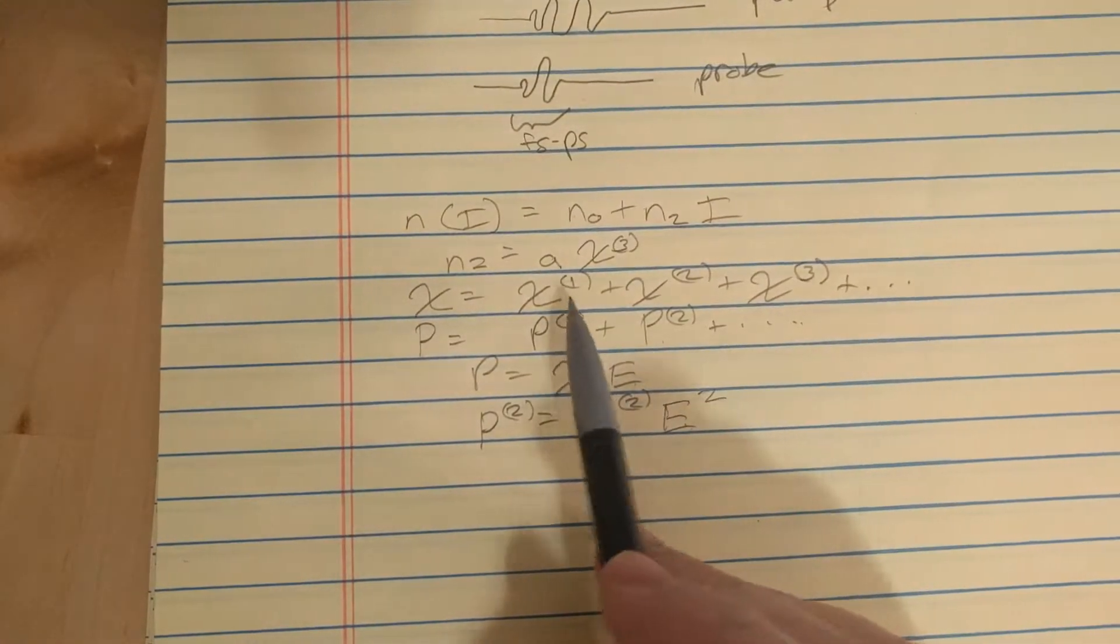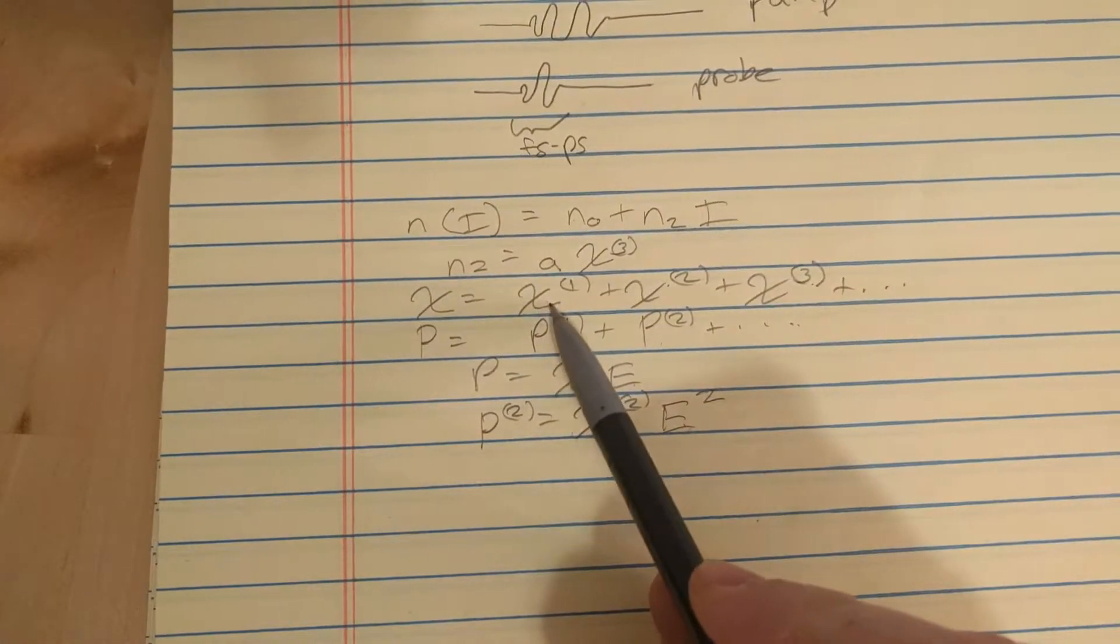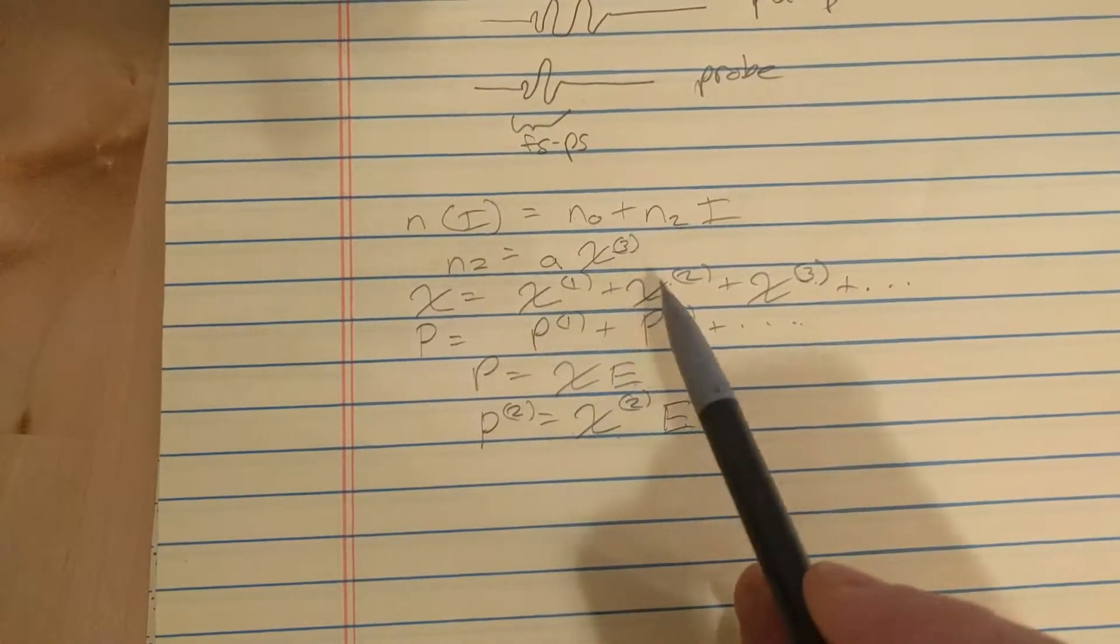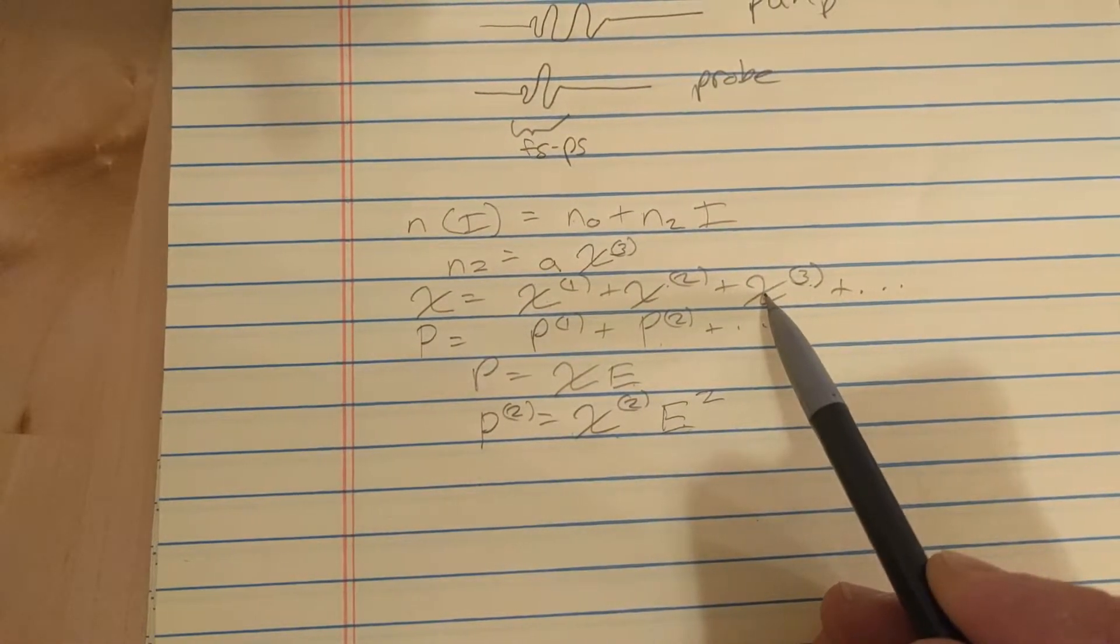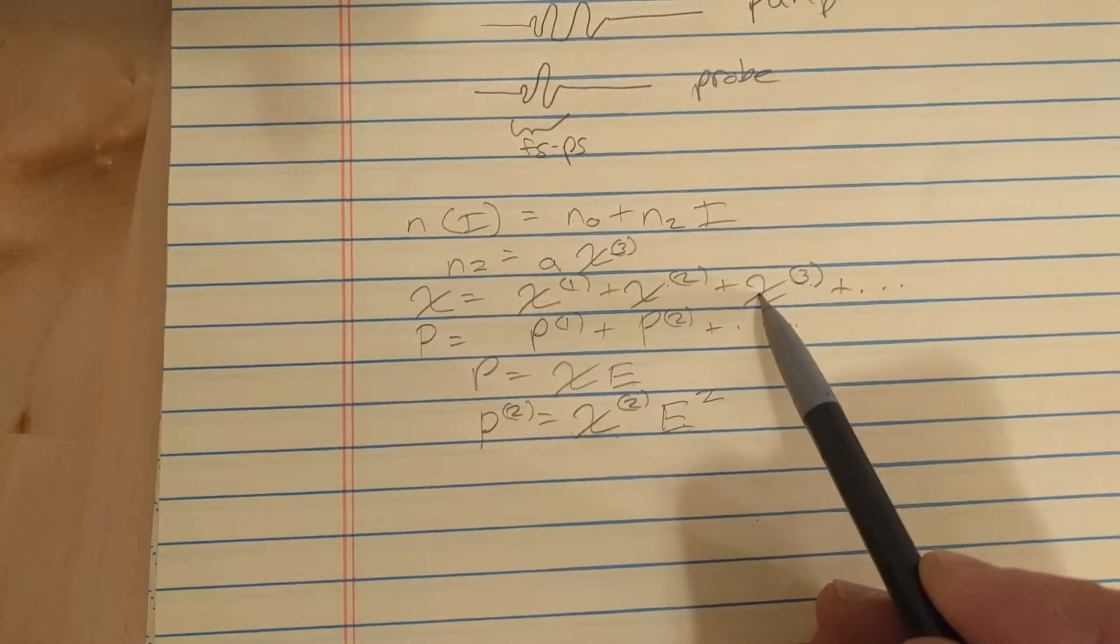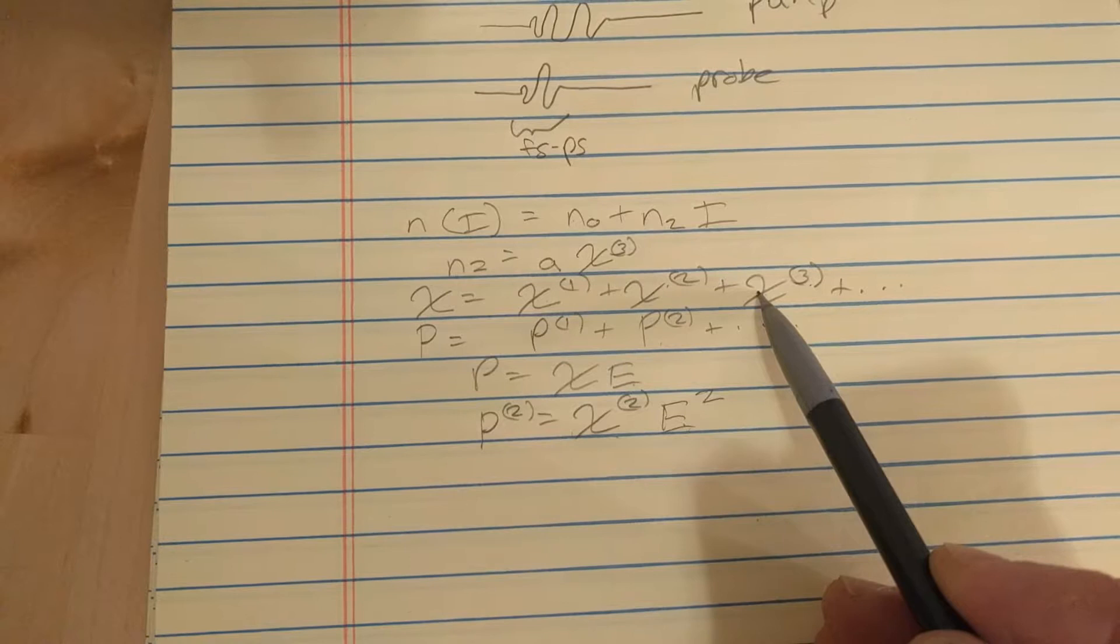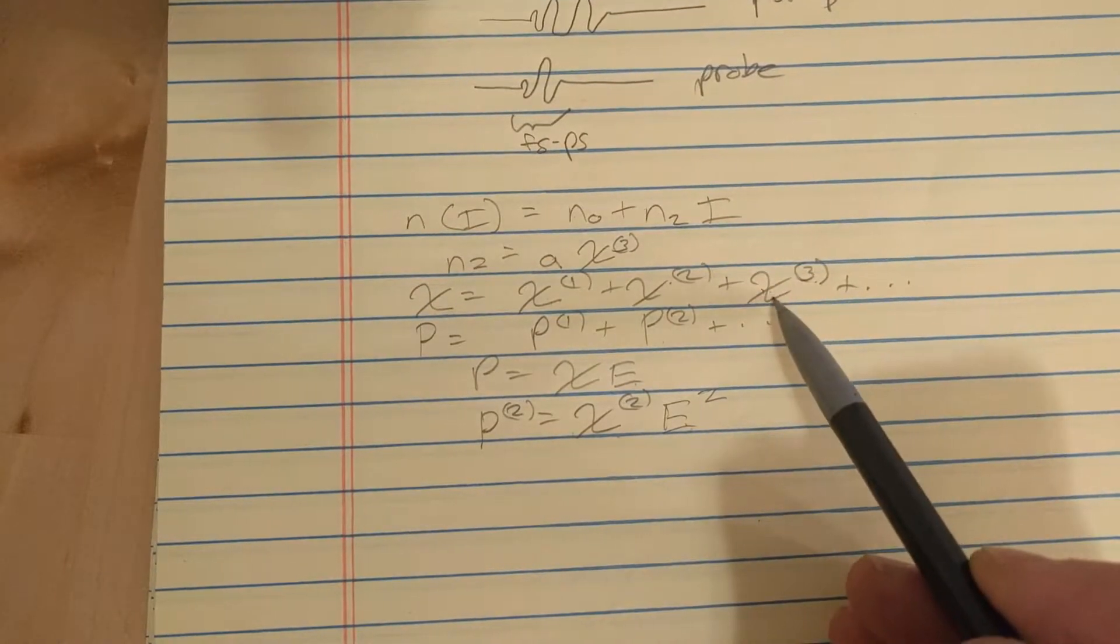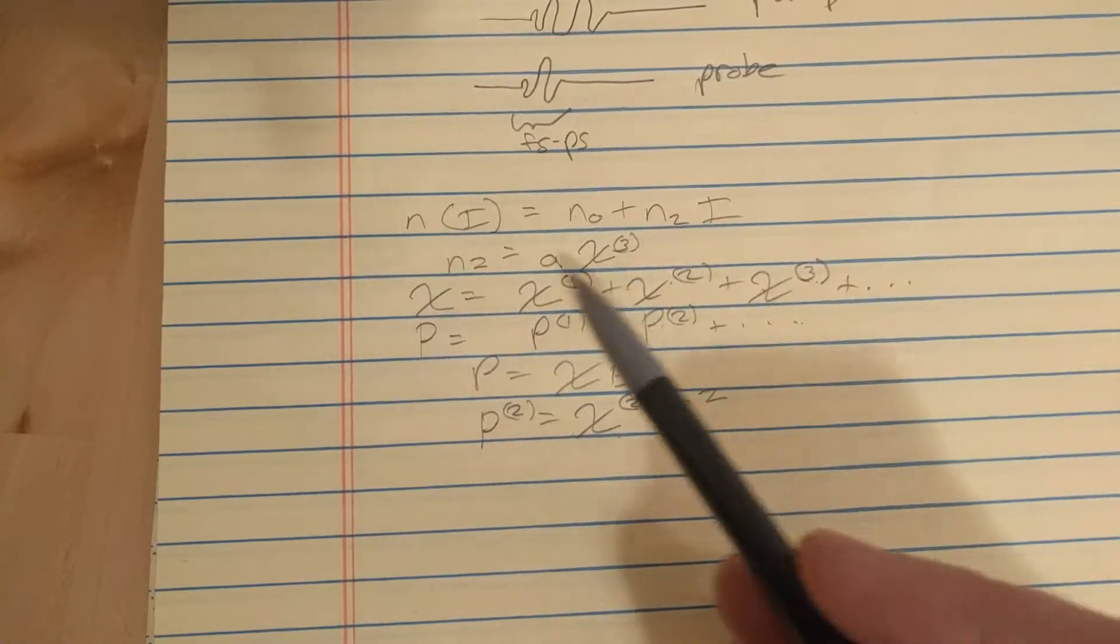And I like to think of the different chis as corresponding to different wave mixing processes. So chi1 is two-wave mixing. Chi2 is three-wave mixing. Chi3 is three-wave mixing. I'm very interested in chi3 because I do Raman spectroscopy, which is a four-wave mixing process. And chi3 also shows up in the Kerr effect from this.